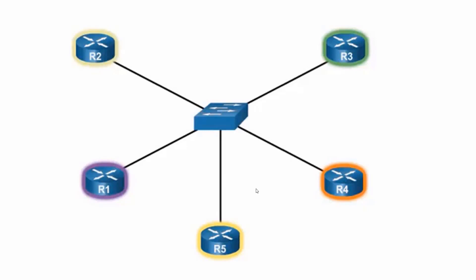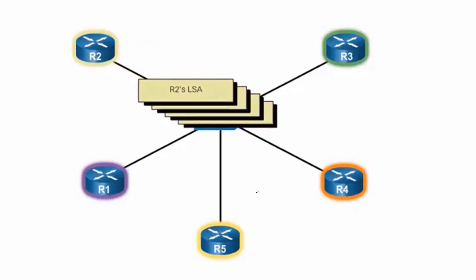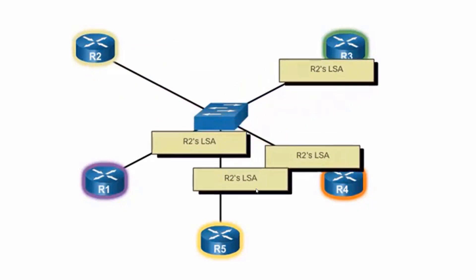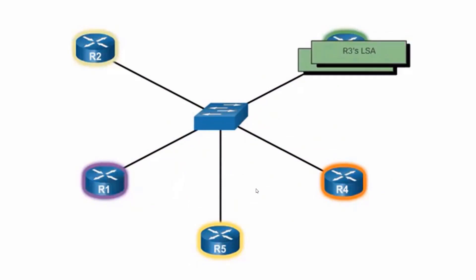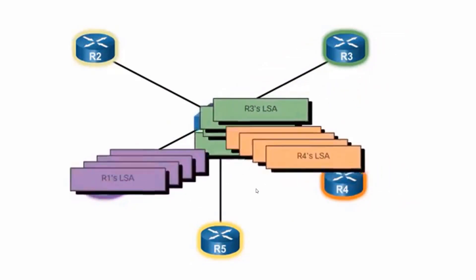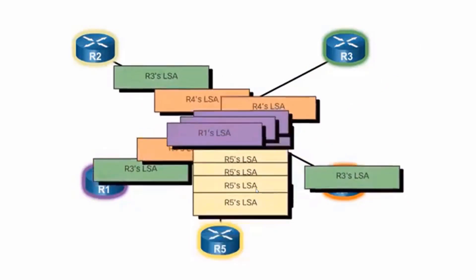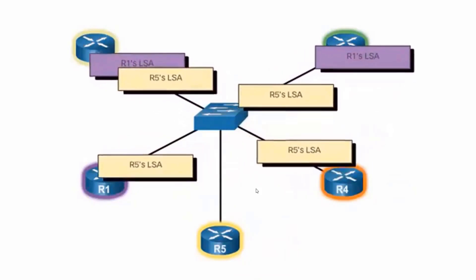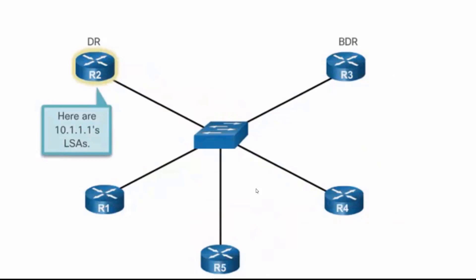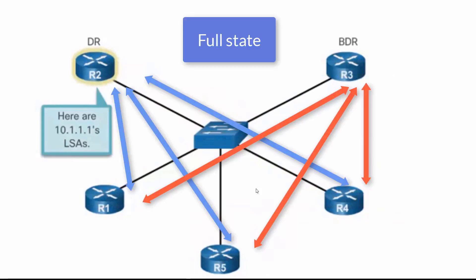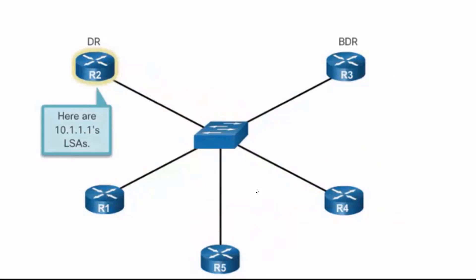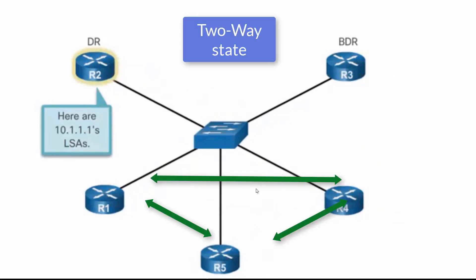For example, if R2 has a change, it sends LSAs notifying all other adjacent routers. Those routers then also notify all their own adjacencies, resulting in excessive LSAs where each router notifies every other router. By having a DR and BDR elected in a multi-access network, routers R1, R4, and R5 only need a full state with the DR and BDR. R1, R4, and R5 only maintain a two-way state with each other — they don't need identical topology tables with every other router.